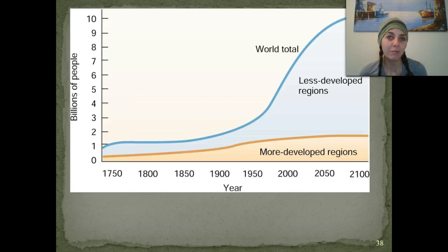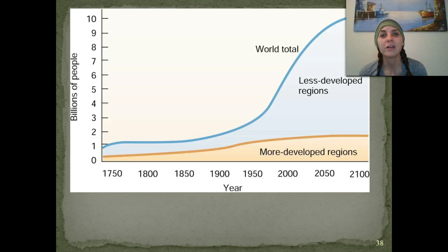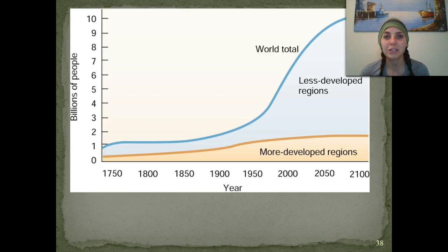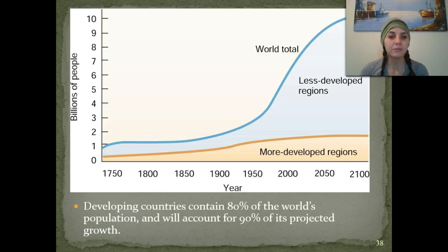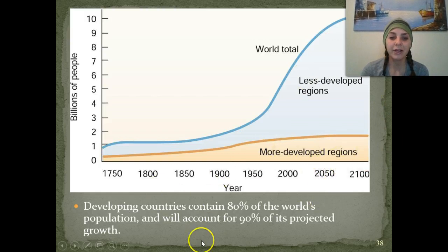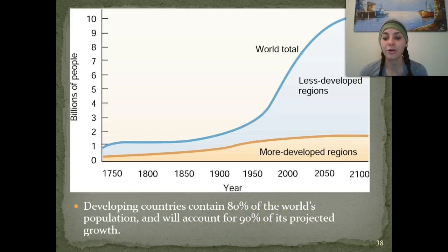Even though we have modern medicine in many places around the world, there are still some places that don't have access to clean water, food, or modern medicine. That's where it gets tricky trying to figure out what exactly is the carrying capacity — how many people can the Earth really support. Developing countries contain about 80% of the world's population, and will account for 90% of the projected growth of the human population on Earth.